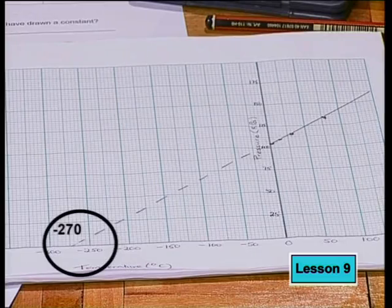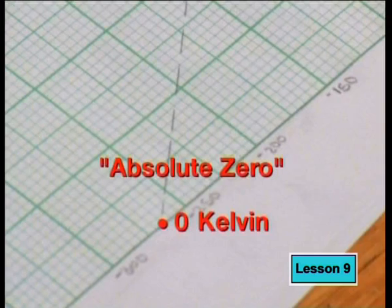Of course, the gas equations don't apply to liquids and solids. Remember how the learners extended their graph line to predict the temperature at a pressure of zero kilopascals. We call this temperature zero Kelvin or absolute zero.